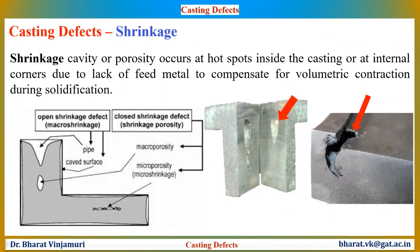A shrinkage cavity is a depression in casting which occurs during the solidification process. Shrinkage can result in two types of casting defects: open shrinkage defects and closed shrinkage defects. Open shrinkage defects are open to the atmosphere, while closed shrinkage defects — also known as shrinkage porosity — form within the casting. Shrinkage defects can be prevented by improving the casting structure and by designing a proper gate system with risers that ensure a continuous flow of molten metal.